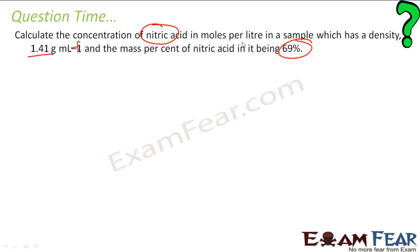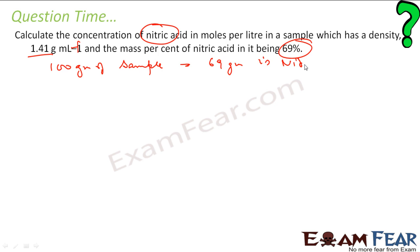When I say mass percent of nitric acid is 69%, that means if I have 100 grams of my sample, in that 100 grams, 69 grams is nitric acid. Please understand this: if I have 100 grams of sample, then 69 grams of that sample is nitric acid.